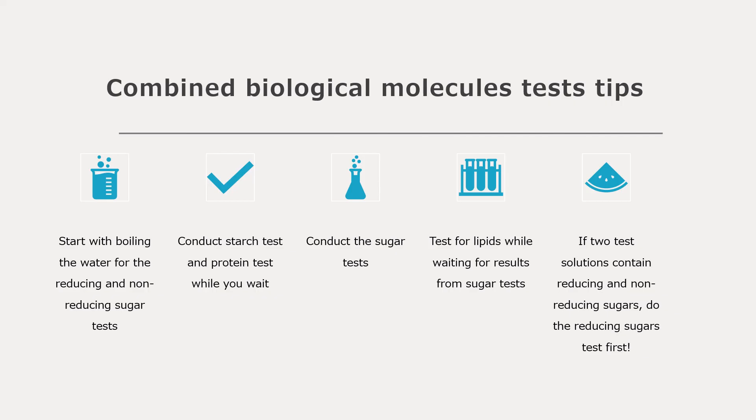What are some tips if you were doing a combined biological molecules test? If you look at past paper 3 questions, you have questions where they say there are unknown compounds in five solutions and you need to figure out which one has what. The first thing you should do the moment you encounter a test like that is start boiling the water for the reducing and non-reducing sugar test. Even before going through too much detail, set up your Bunsen burner and put your beaker with water on so it starts boiling, then read all the instructions. The water might take a while to boil and you don't want that to delay you.